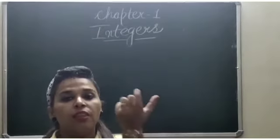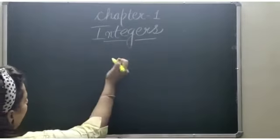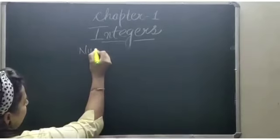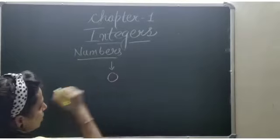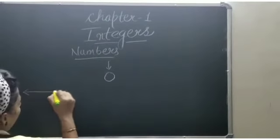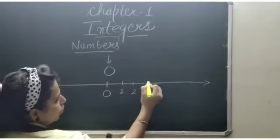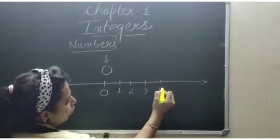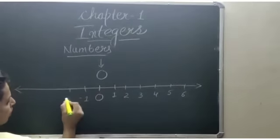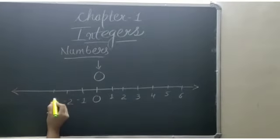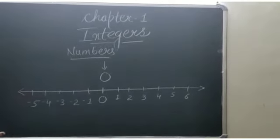Integers are basically the numbers. Let's see on the blackboard. Integers are basically the numbers which include 0. If I make a number line — this is called a number line — 0, 1, 2, 3, 4, 5, 6 on the right, and on the left hand side: minus 1, minus 2, minus 3, minus 4, minus 5. This is called a number line.